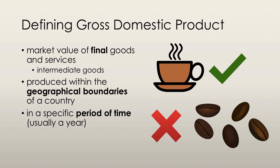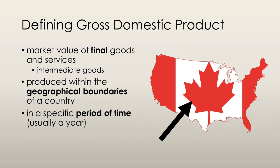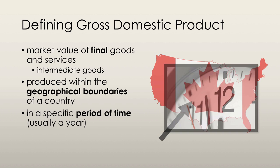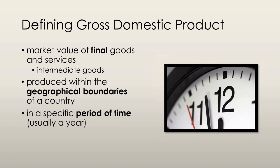The second aspect: GDP only includes goods and services produced within a country's geographical boundaries at a particular time. Anything produced outside of Canada, for example, is not counted as part of Canada's GDP. GDP also measures production only within a given period of time, usually one year. Standard of living is said to rise when GDP rises as well.